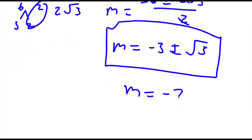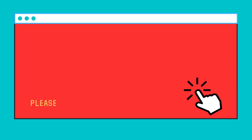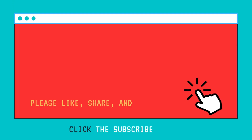So in addition to m equals negative 2, these are my three values of m: m equals negative 2, and m equals negative 3 plus or minus the square root of 3.